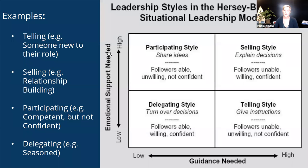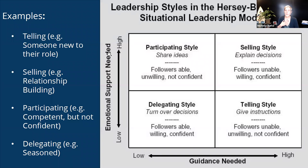Then we go to the top right-hand corner: selling style. This may be for someone that knows what they're supposed to do, they're confident, but they may be unwilling to do it. Explaining the decision — this may be where you have to sell them on why you want them to do whatever you want them to do. Maybe they don't agree with it, maybe it doesn't make sense to them, they're like 'I'm not doing it that way, that's dumb.' You may need to use the selling style to explain what and why. Then participating style — top left-hand corner. You have somebody on your team that you see potential in, they're excited about it, they want to work collaboratively with you, but they may not be confident in their skills. They may need some help — that's where participating comes in, the collaboration.